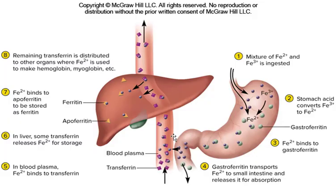When your red blood cells die — and they will, because you threw away the nucleus so you have no repair mechanisms — we break them down, break the heme down, and try to save the bits and pieces to recycle and make new hemoglobin for newly formed erythroblasts. Here's a flow sheet: say you've eaten a steak and your stomach acid converts the iron into a form that can bind to gastroferritin found in the stomach.